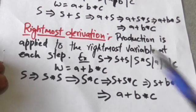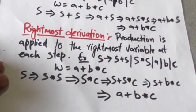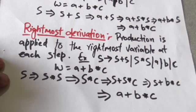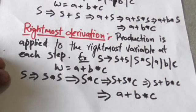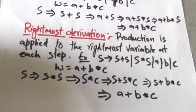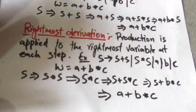Now let's study about rightmost derivation. If in a derivation of a string of terminals from start symbol S, production is applied to the rightmost variable at each step, then the derivation is called rightmost derivation. In rightmost derivation, production is applied to the rightmost variable at each step.